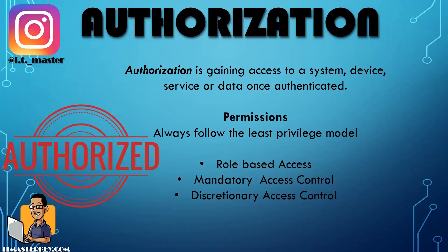There are a couple different access models: role-based access control, where your role determines your permission level; mandatory access control; and discretionary access control. The key takeaway, no matter the model, is that once you become a system administrator, you need to always give people the least privilege they need to do their job. If they just need read access, give them read access. If they need complete ownership, give them that — but don't be lazy and give full control when it isn't needed.